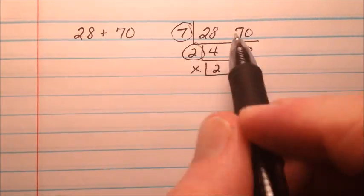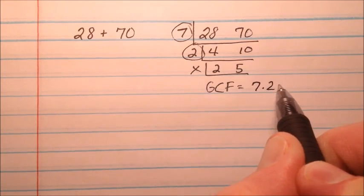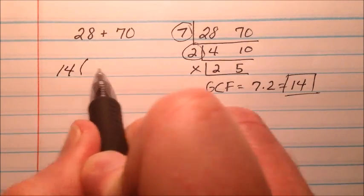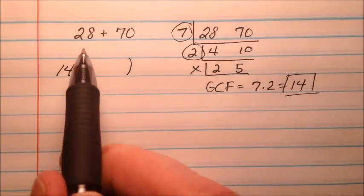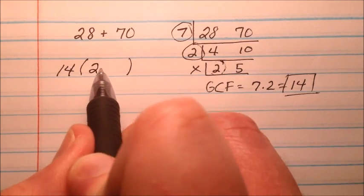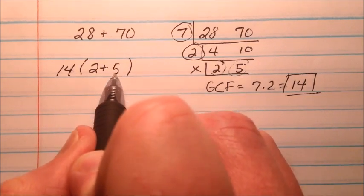So my 7 and my 2 are my greatest common factors, so I'm going to say 7 times 2 equals 14. So that 14 is going to go out front as the greatest common factor, and 28 divided by 14 was that 2 that we had, so 2 plus 70 divided by 14 is that 5 that we had, so plus 5.